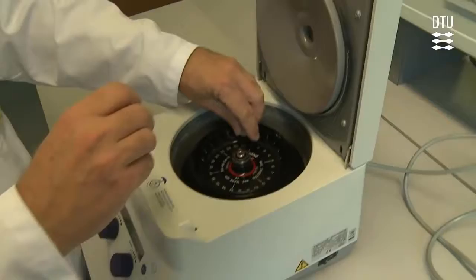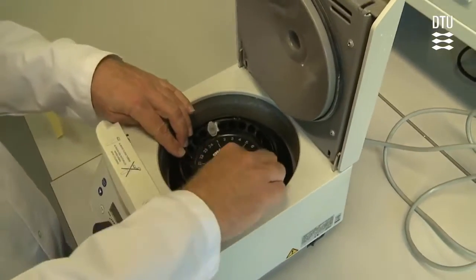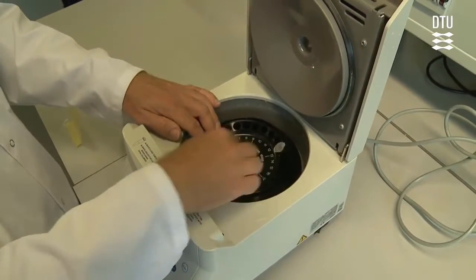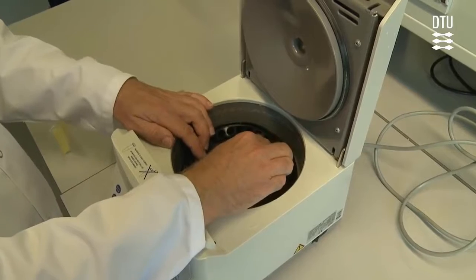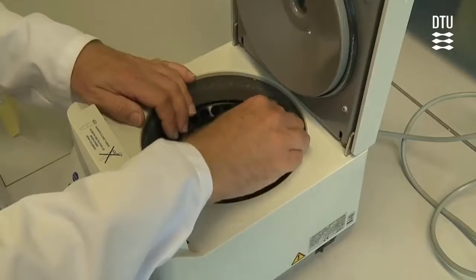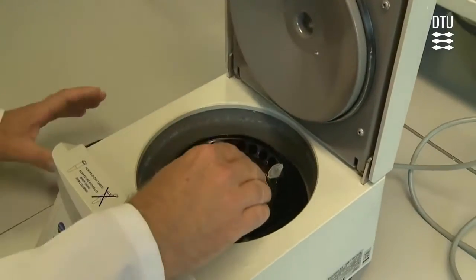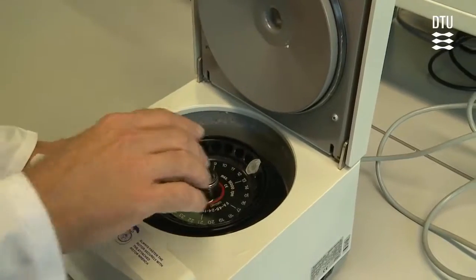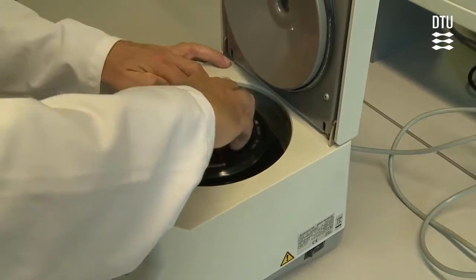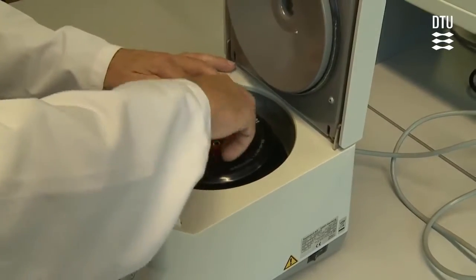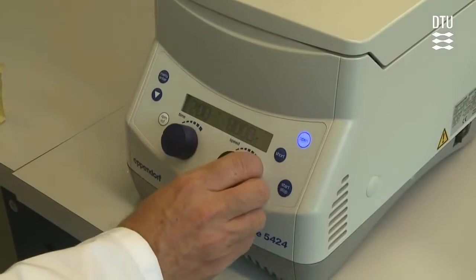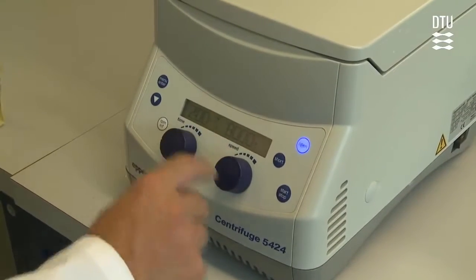Now it goes into the centrifuge. It's important that it's balanced, so you place them opposite each other. A good trick is to orient the hinge so it will be pointing upwards or outwards of the centrifuge, because the pellet that may be formed can be very hard to see, and when you do that, you know where to look. You put on the lid and close the centrifuge. In this case, you run it for 2 minutes at 8000 RPM.